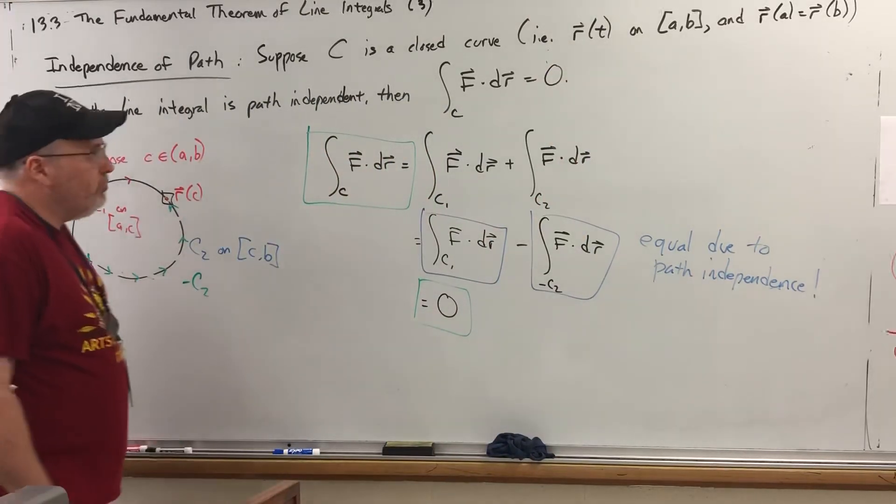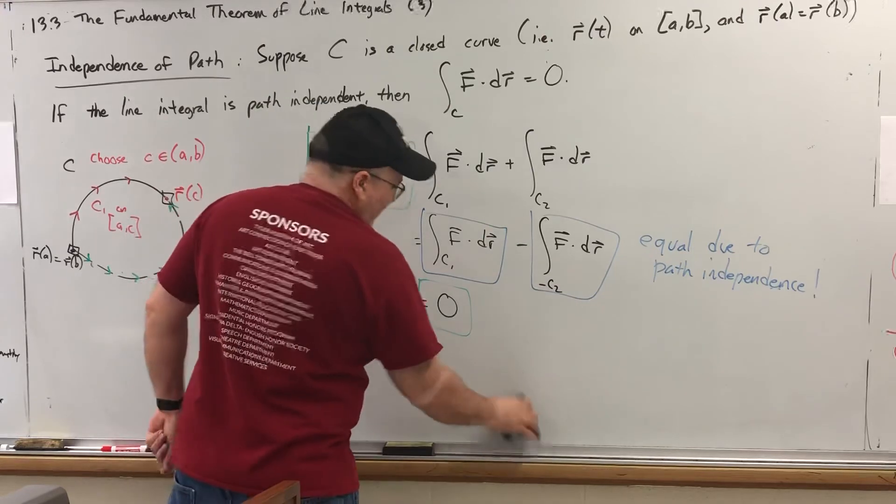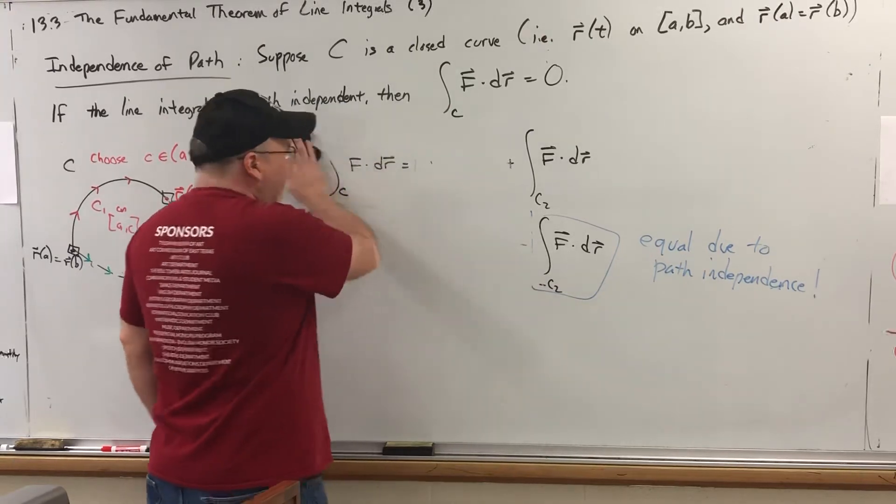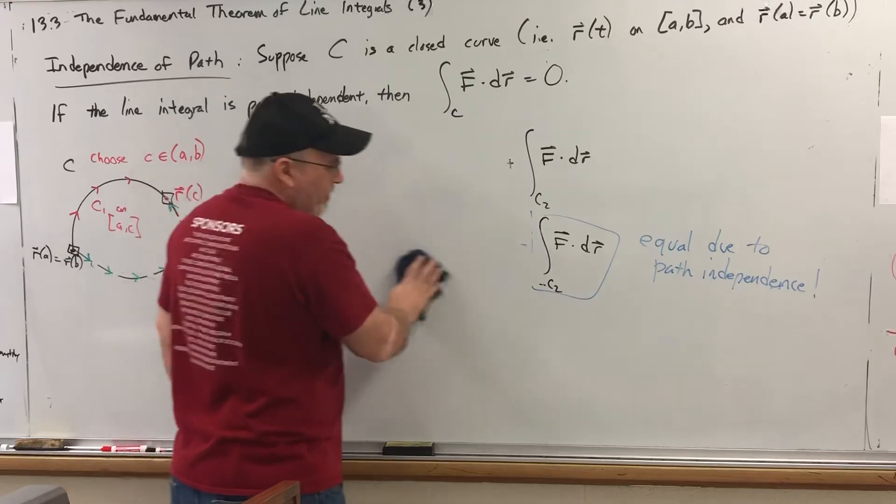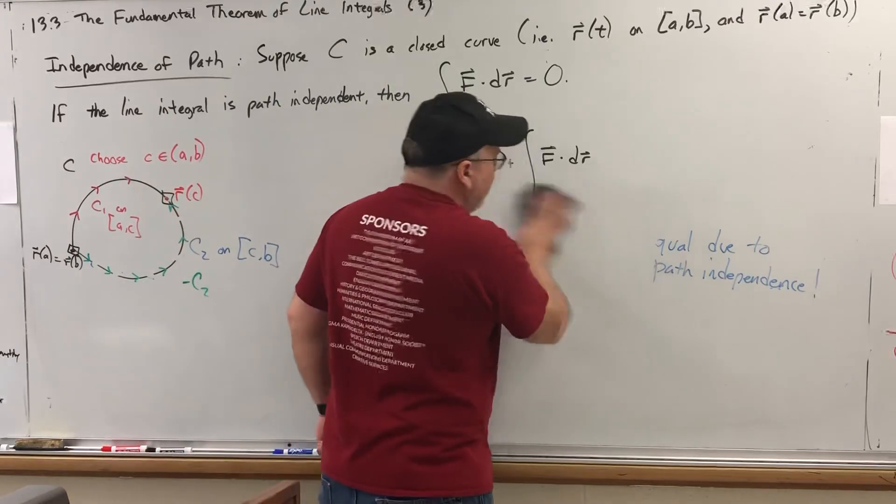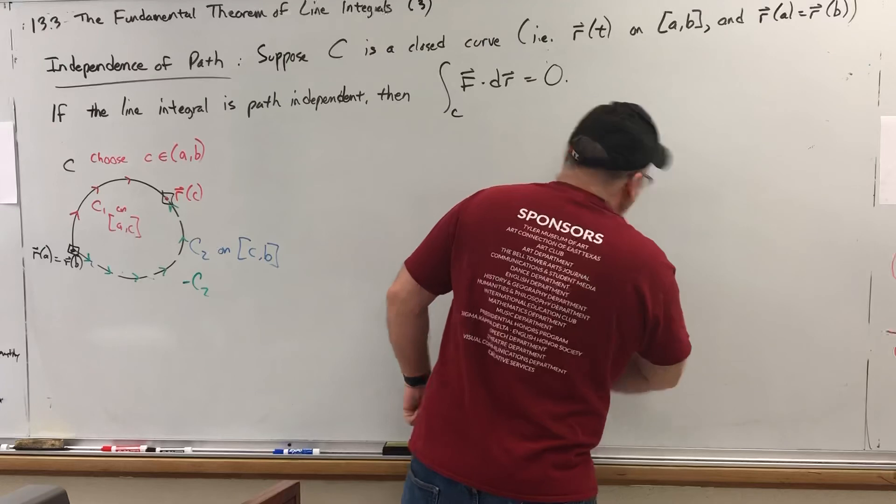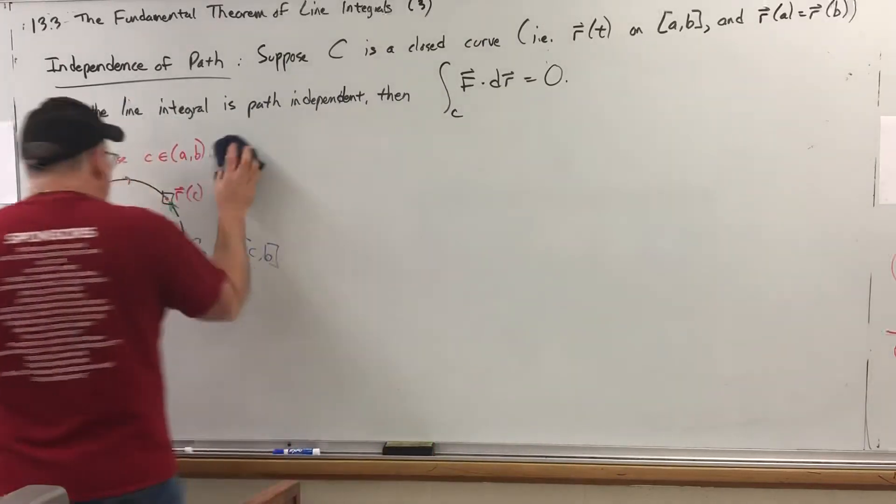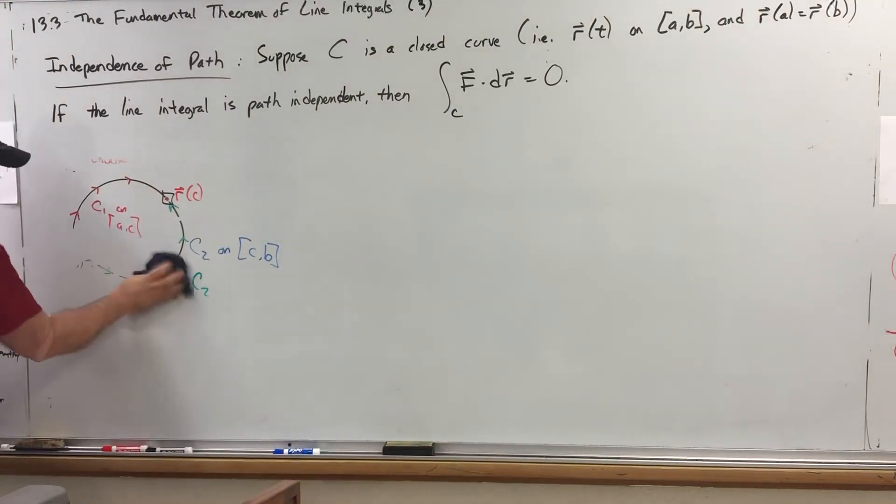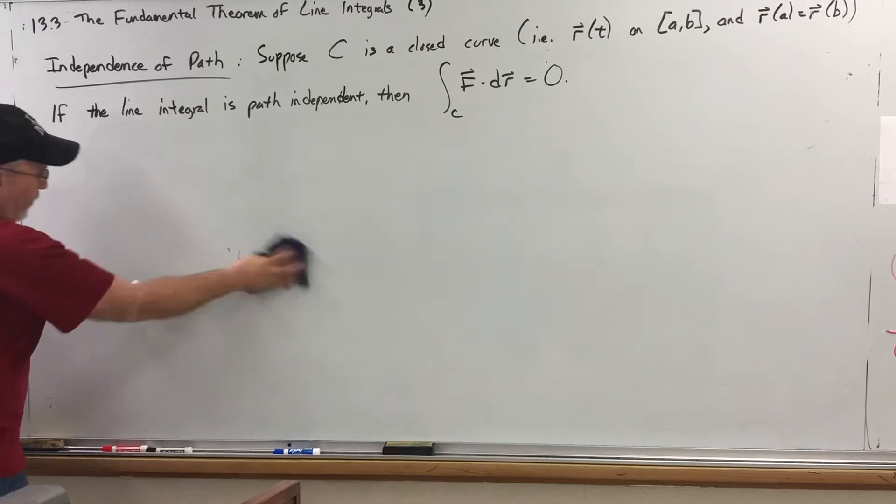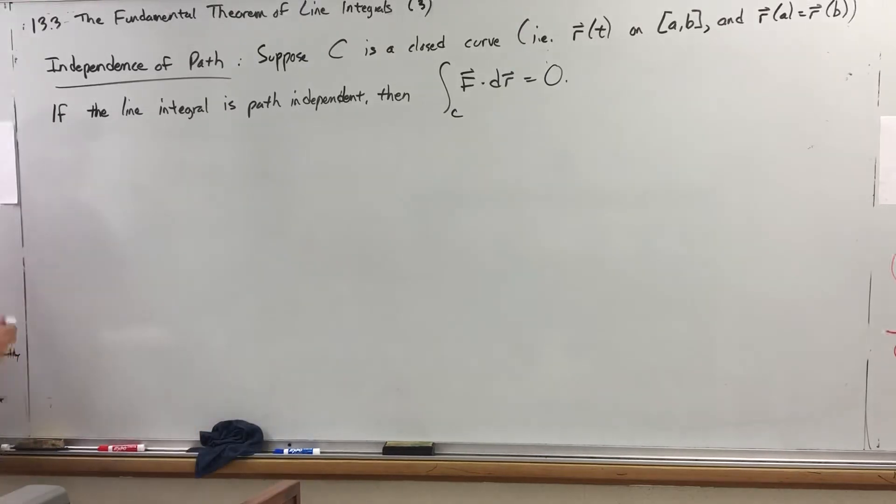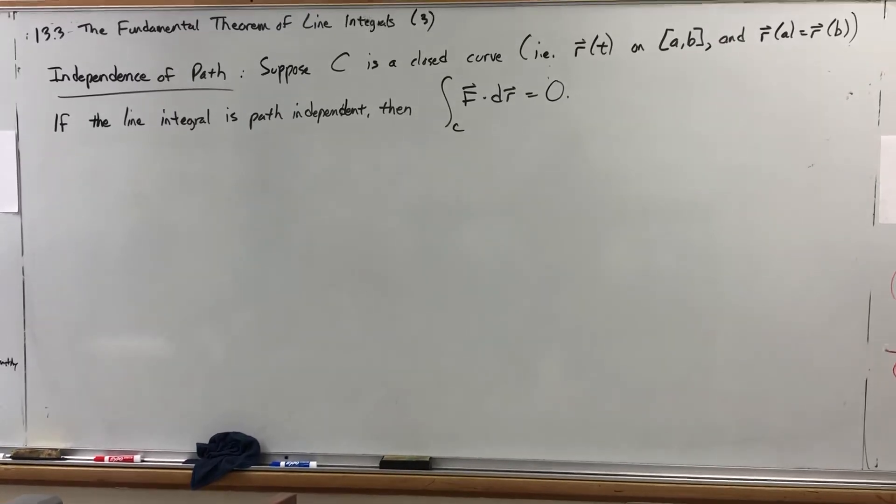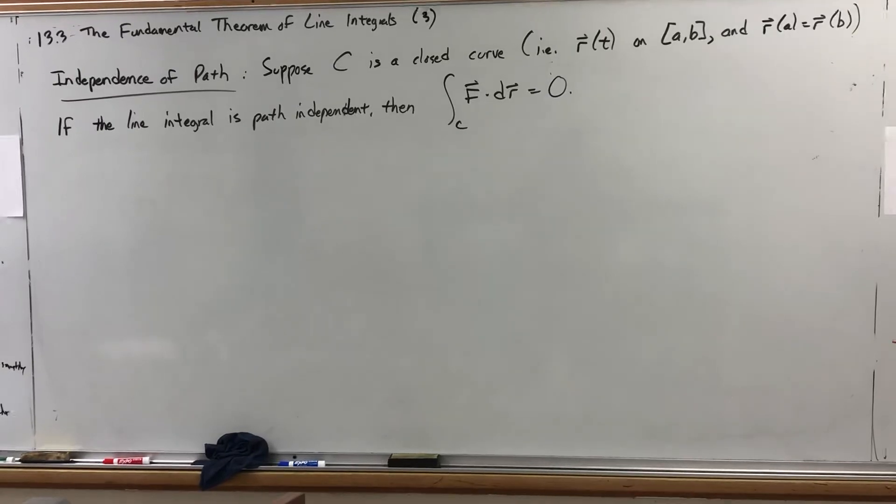Pretty nice result. Because it says, don't even bother doing the integral. If you are path independent, how do we determine that? We'll figure it out in a moment. If you are path independent, then any line integral over a closed curve will always equal zero. Nice result. Sorry, I just realized that I may have written a few things off the screen, but it looks like it was all good.